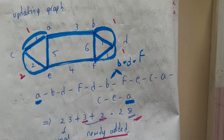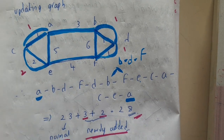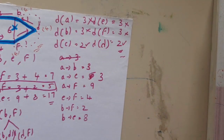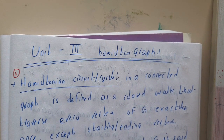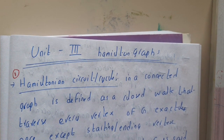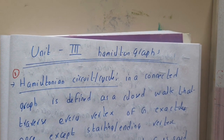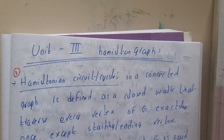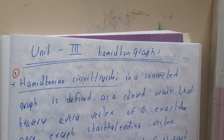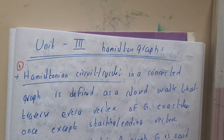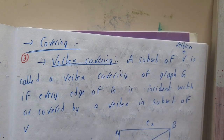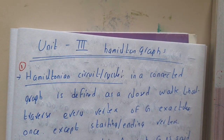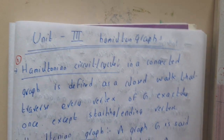If there is any confusion, comment down below and I'll try to help. In the next lecture we are going to start the next unit. There are only about six topics in this unit so please go through each and every topic. We will be discussing Hamiltonian graphs initially in the next lecture. Thank you for watching.